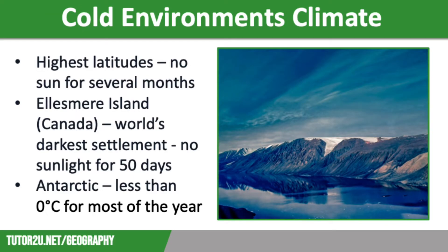Let's have a think about the climate in cold environments and just how extreme it can be. At the highest latitudes, the sun does not even rise for several months of the year. A good example of this is Alert, on the northeast coast of Ellesmere Island, Canada, which is the world's darkest populated settlement. Located at 82 degrees north, its tiny handful of residents receive no sunlight for 50 days annually.